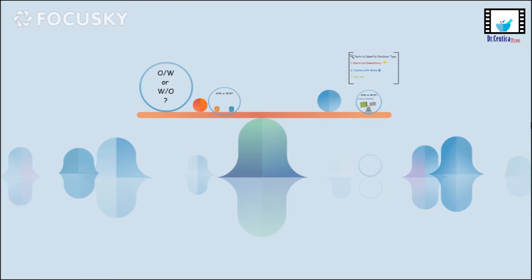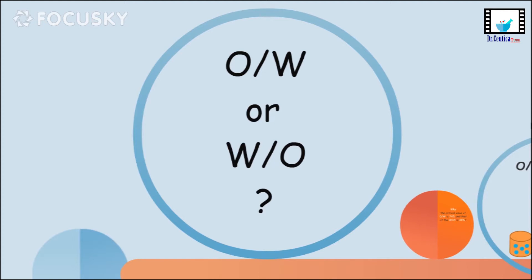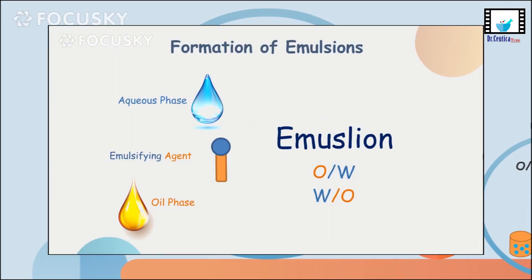Hello DCT family, hope you're doing great. Today we are continuing the emulsion series and we will start with an answer to the last question we had about emulsions: how to differentiate between the oil-in-water and the water-in-oil emulsions. When we put the two components — the oil and the water — with the emulsifying agent, what type of emulsion will be formed?